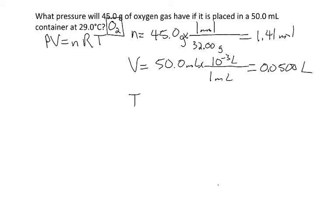And then finally, the temperature I need to get to Kelvin. So to get to Kelvin, I'll add 273.15. And the correct number of significant figures, my temperature is 302.2 Kelvin.